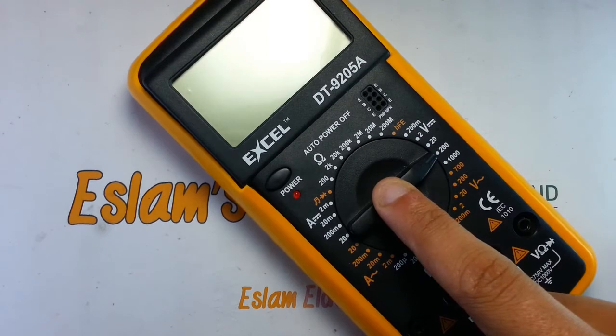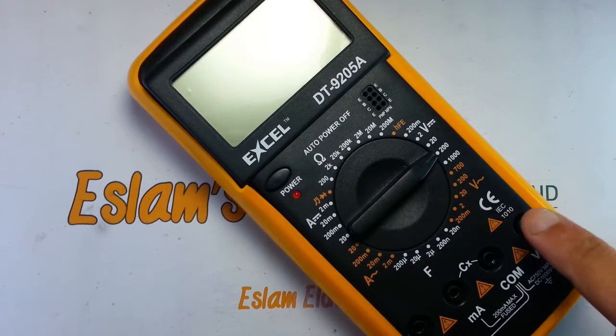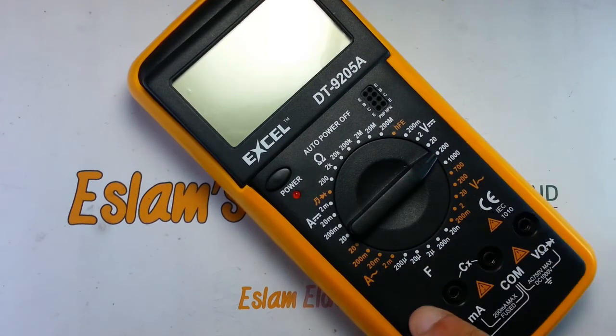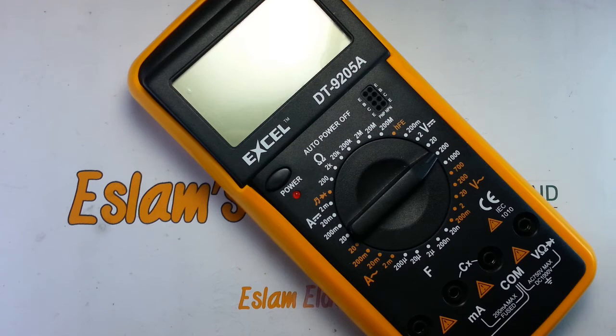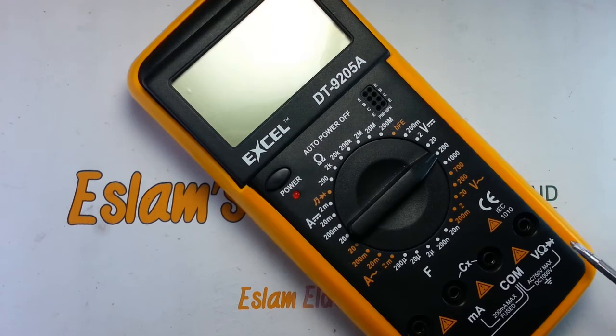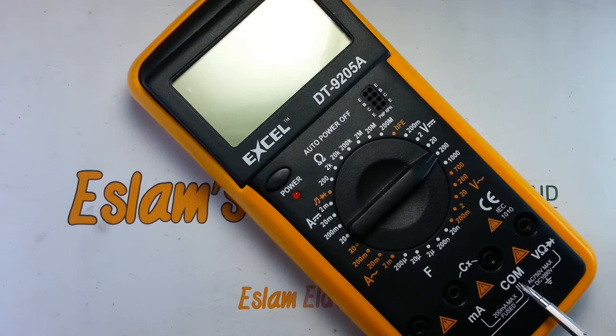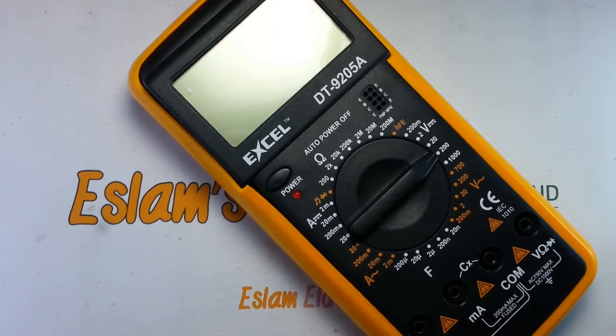If we take a closer look to see what the multimeter consists of, we will see a digital screen that displays the readings, a cursor, and lead connectors for connecting multimeter wires. So first, let's talk about the symbols that appear on the multimeter.